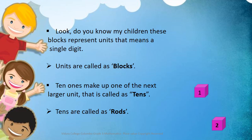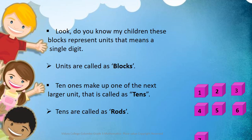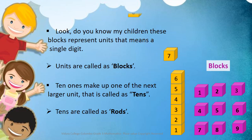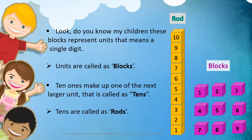Look at this. Do you all know these blocks represent units? That means a single digit. Units are called as blocks. Can you all see the yellow blocks? These blocks make a rod. Ten ones make up one of the next larger unit. That is called as tens. Two-digit numbers are represented in rods. Tens are called as rods.